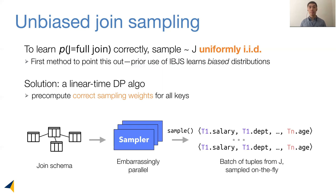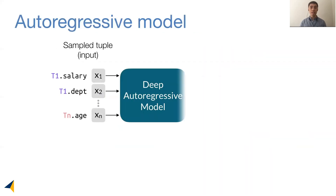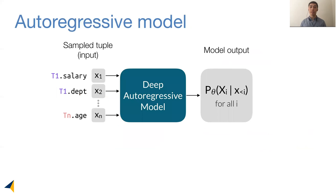This is how our sampling pipeline looks. We start with the joint schema graph, and because of the IID property, we can safely launch multiple sampler threads to run sampling in parallel. On each sample call, a batch of tuples from the full join will be returned, containing all columns from all tables. Now that we have our sample tuples, we can feed them into a deep autoregressive model for training.